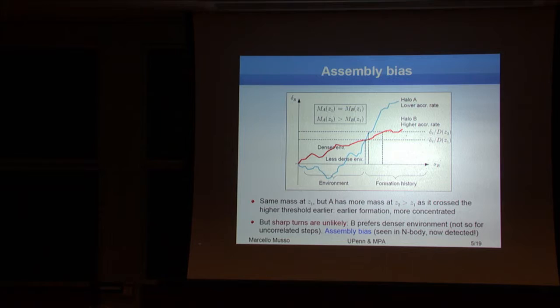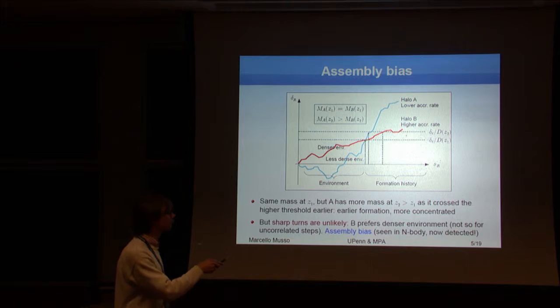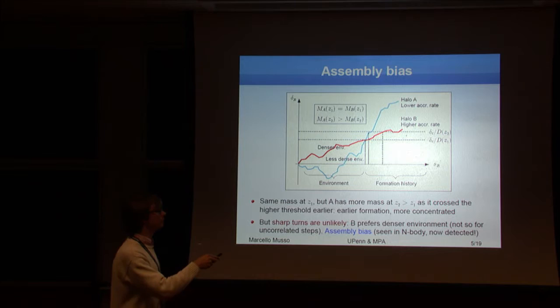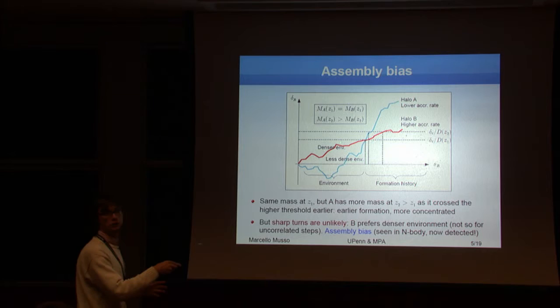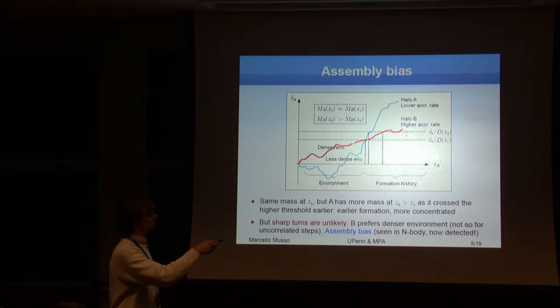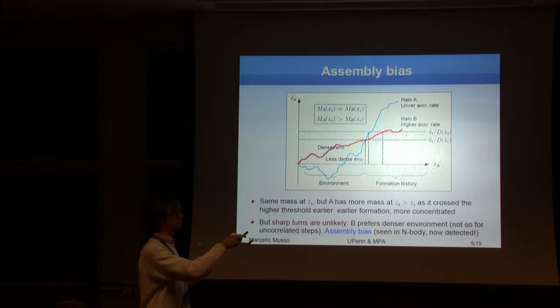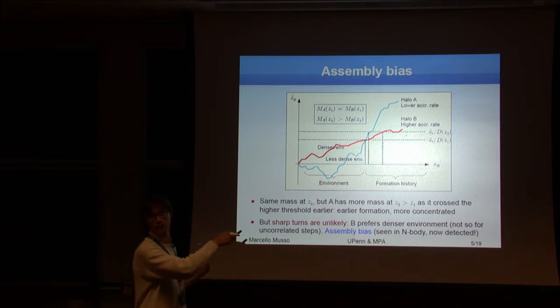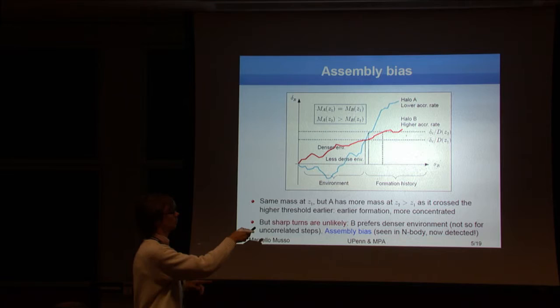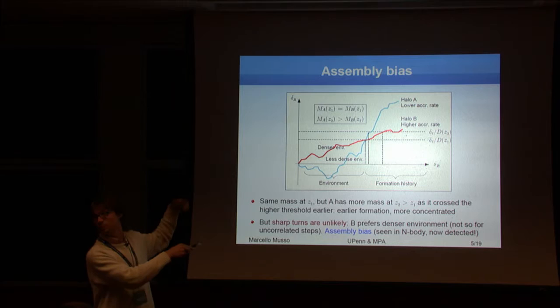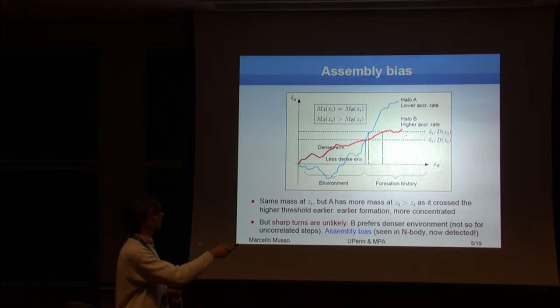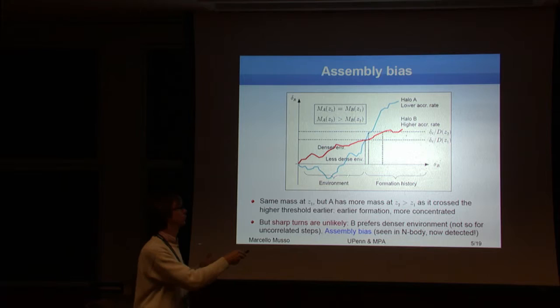Because the more time goes on, the more is the mass that you can accrete onto your halo. So you can see that the first crossing scale moves, and when the derivative of the trajectory is positive, then the crossing scale moves in a continuous way. While when the derivative of the trajectory is negative, then you have a jump of the first crossing scale. So you can think that the smooth change of the mass as a function of redshift is smooth accretion, while final jumps are mergers.